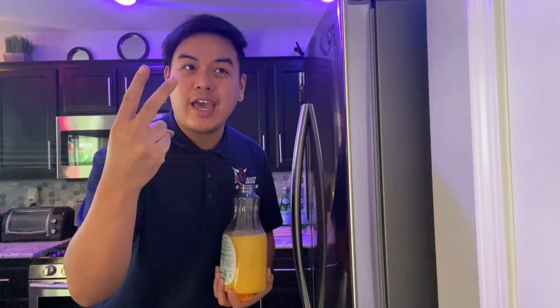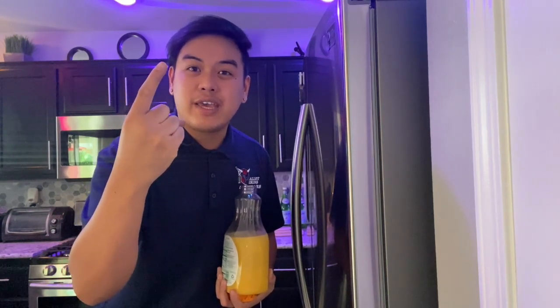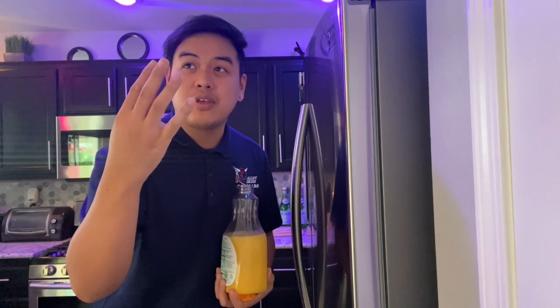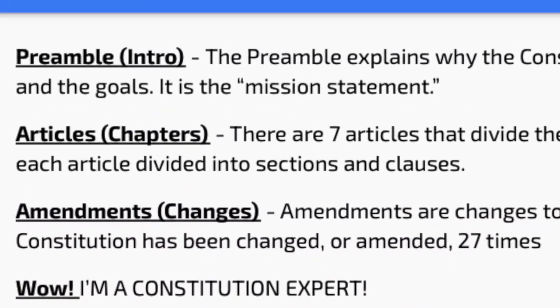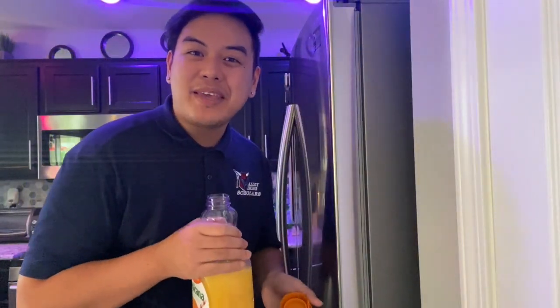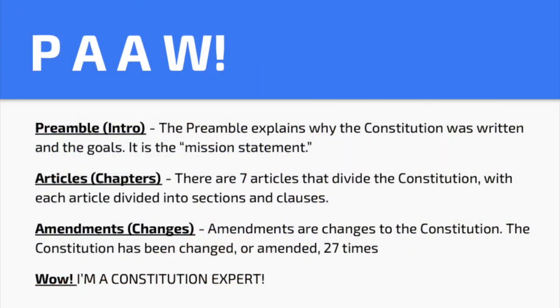So we have P, A, A, and W. Preamble, articles, amendments, and W — W stands for 'wow, you'll be a Constitution expert by the end of this video.' So remember PAW: preamble, articles, amendments, and wow — you'll be a Constitution expert by the end of this video.